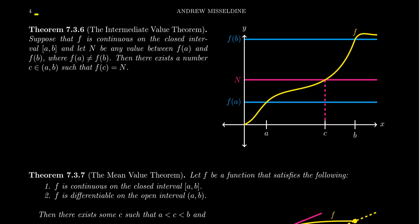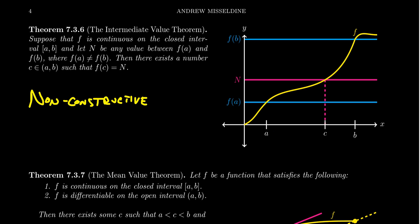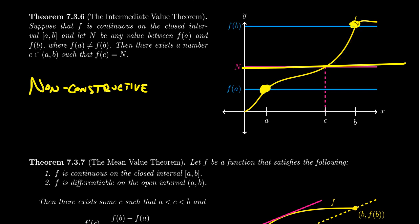We won't prove the IVT — that belongs to a real analysis class — but note it is an existential statement: if certain conditions are satisfied, there exists a number with the property. The IVT is a non-constructive existential statement: it doesn't tell you what the number is, just that it lives somewhere between a and b. The intuition is that the only way to continuously get from below a line to above it is to cross it.